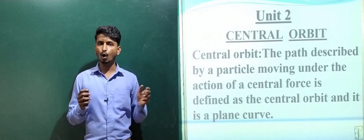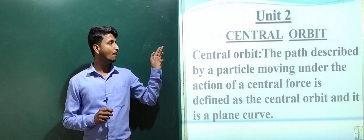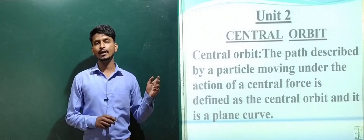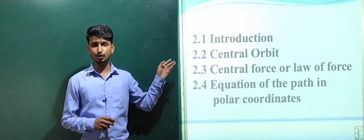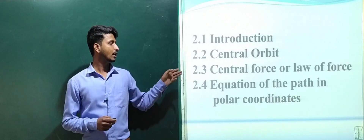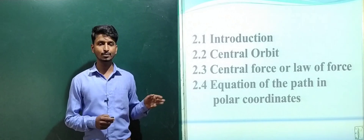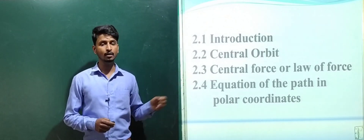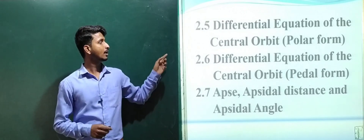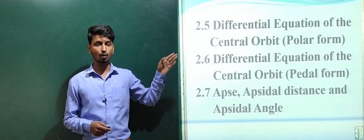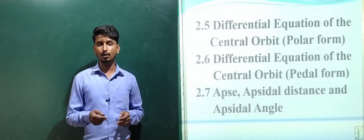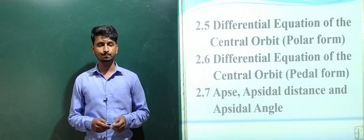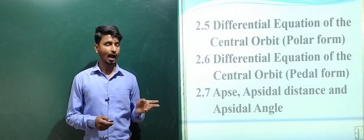Unit 2 is about central orbit. A central orbit is the path described by a particle moving under the action of a central force — it is a plane curve. In this unit, you will see the introduction to central orbit, the definition of central law or law of a force, the equation of the path in polar coordinates, the differential equation of the central orbit in polar form and pedal form, and definitions of apsidal distance and apsidal angle, along with important problems.